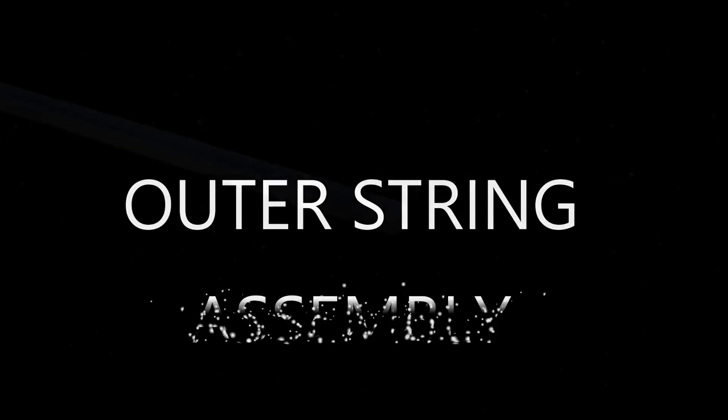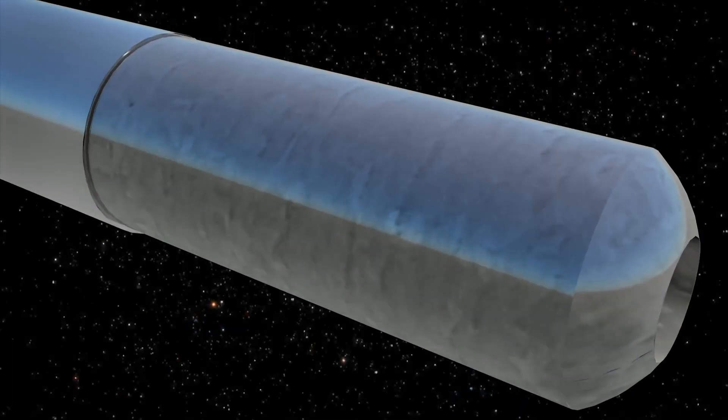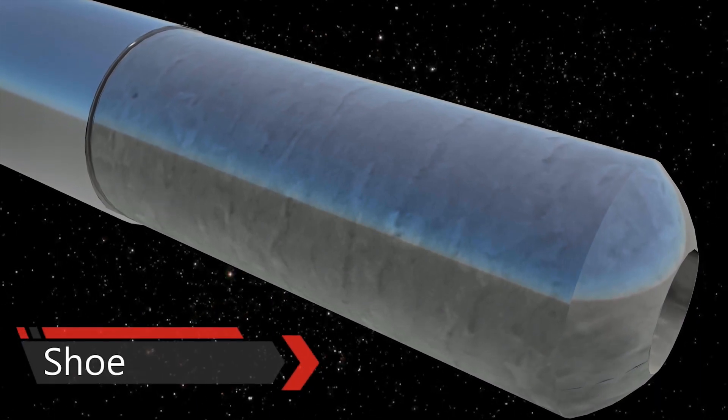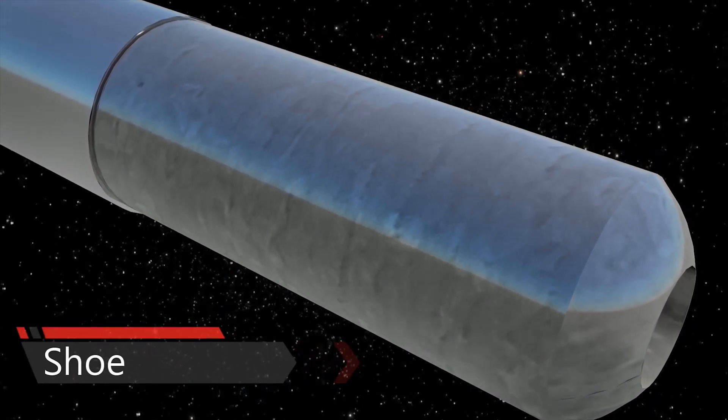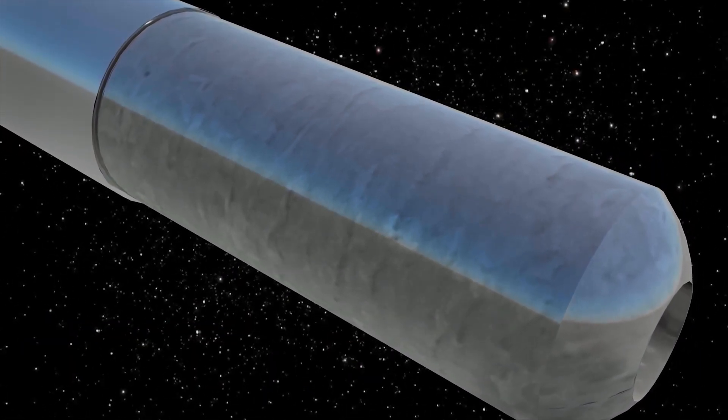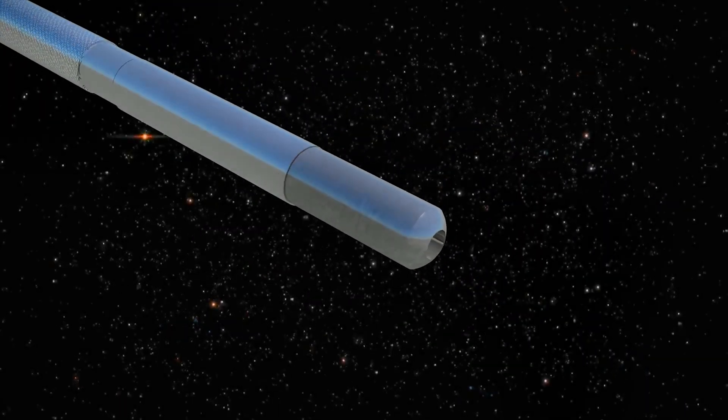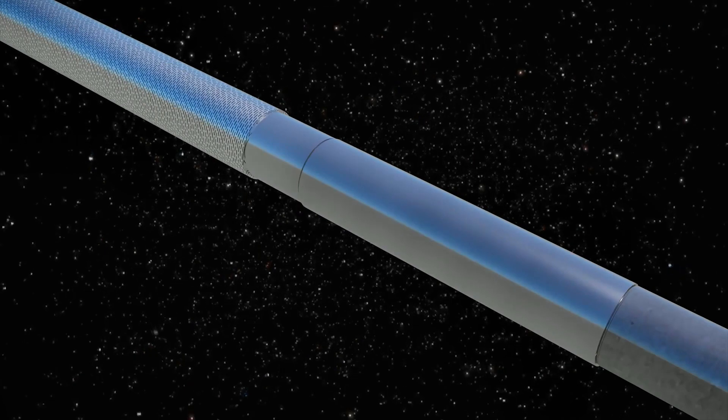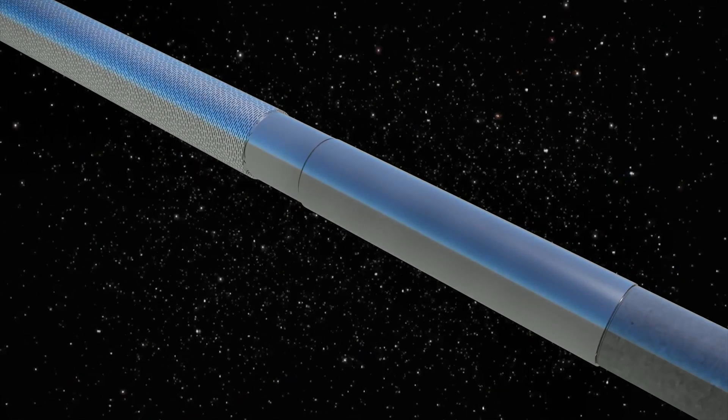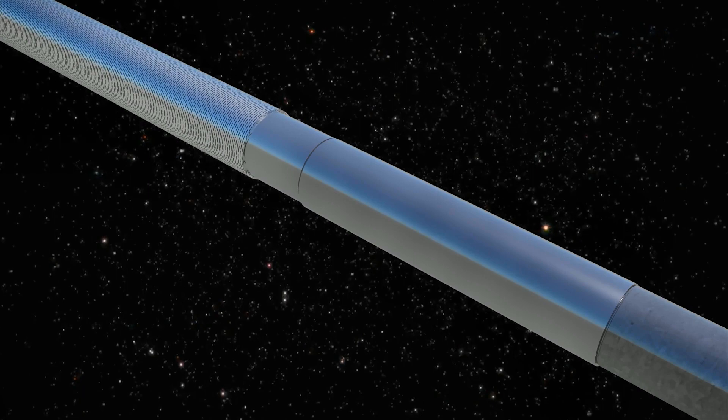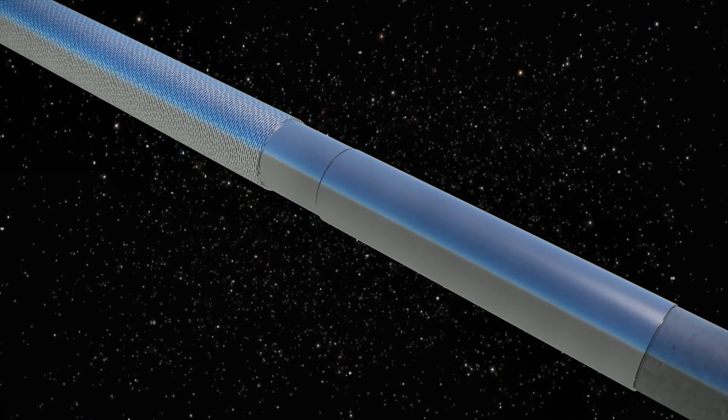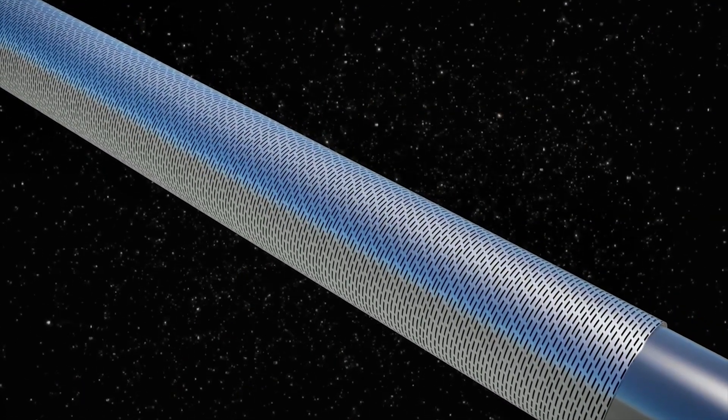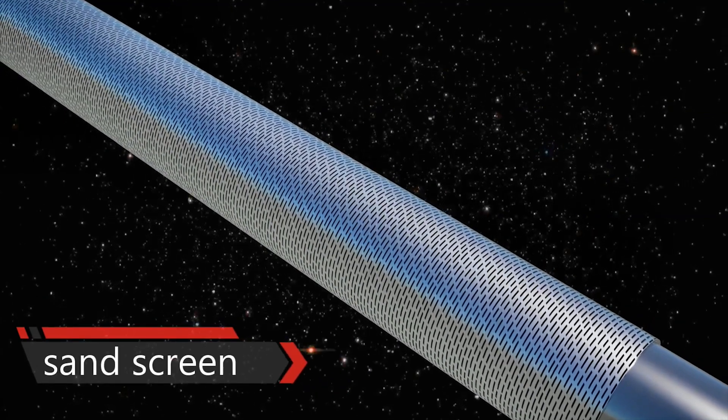Outer string assembly: a shoe at the bottom with O-rings in the groove. It provides the means to maintain seal integrity with the stinger seal sub of the inner string for the designed stroke length sand screen.